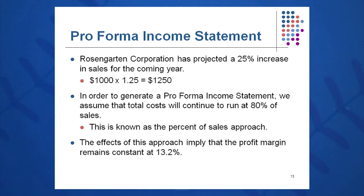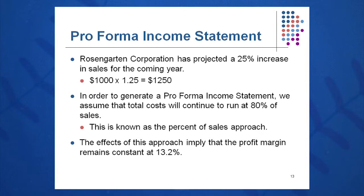Rosengarten is forecasting a 25% increase in sales, so we will multiply last year's actual sales of $1,000 by 1.25 to get $1,250. $1,250 will be their sales forecast for year number one. We will assume that costs will go up with sales — that's a very general assumption that is not always true out there in the real world.